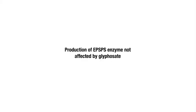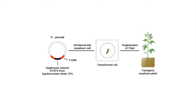Secondly, the production of EPSPS enzyme which is not affected by glyphosate. In this case, glyphosate-tolerant EPSPS enzyme derived from Agrobacterium strain CP4 was introduced into soybean, and transgenic soybean exhibited high tolerance to glyphosate.